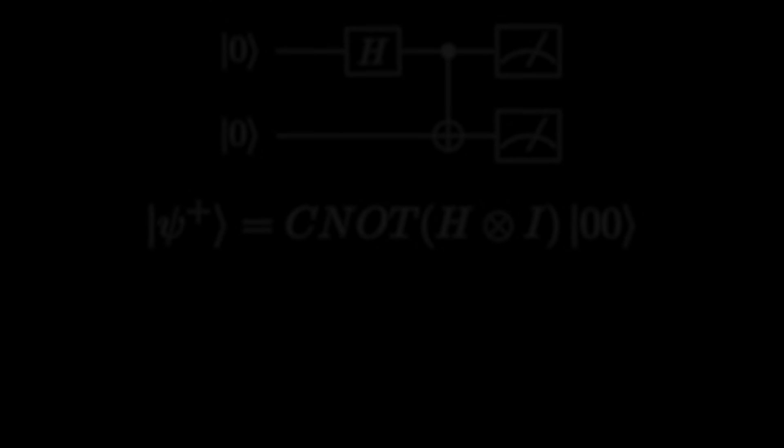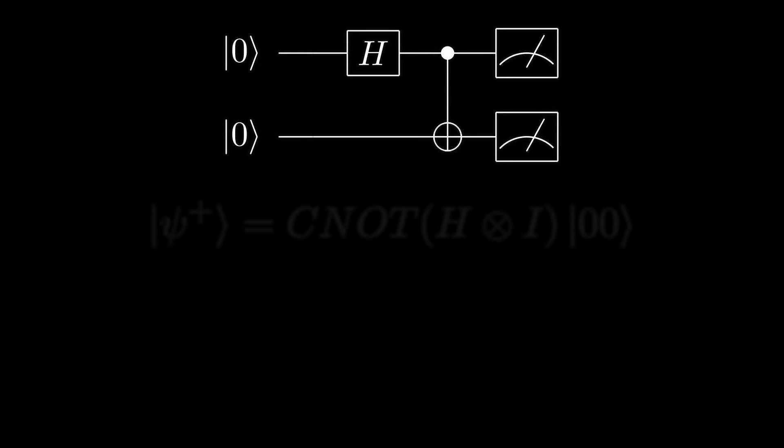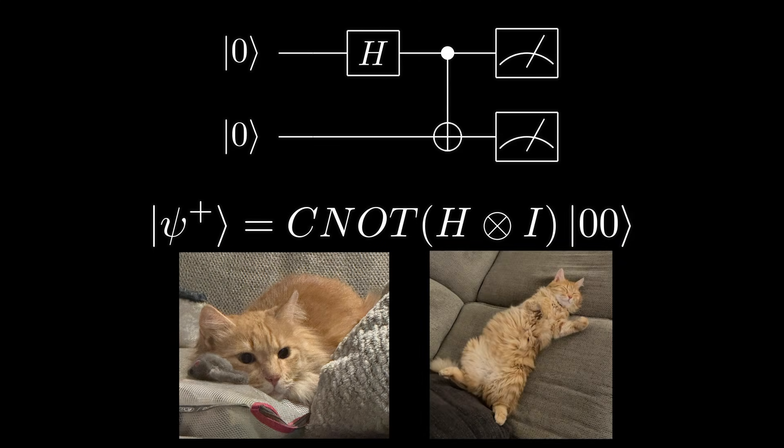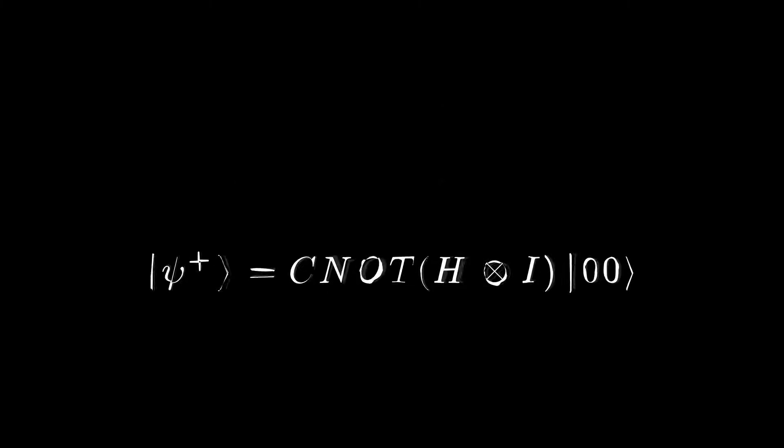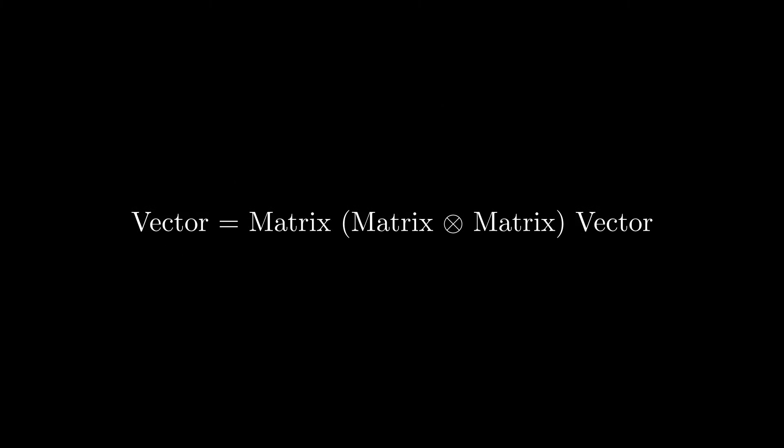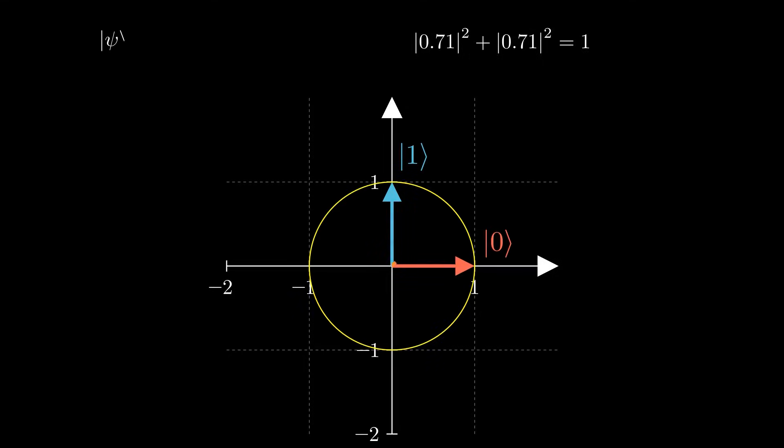Quantum computing can seem confusing at first. Strange circuit diagrams, complex equations, cats that are alive and dead at the same time. But what if I told you that this equation and this diagram mean the exact same thing? By the end of this video, you'll see that it's all just vectors and matrices. And even if you've never taken linear algebra, I will explain everything visually and intuitively.